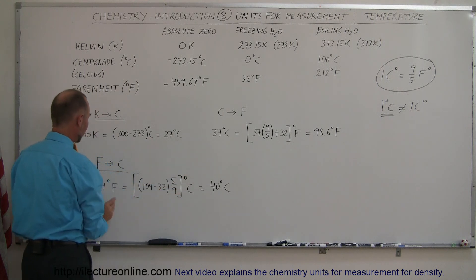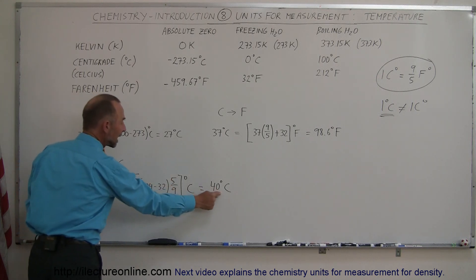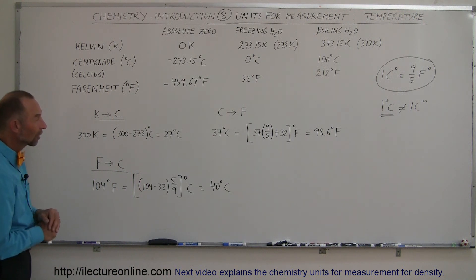And then take that and multiply that as the inverse of that ratio, or 5 nines. So if you take 104 degrees Fahrenheit, minus 32, and take that quantity, multiply it by 5 nines, you get the equivalents in centigrade degrees. In this case, 104 degrees Fahrenheit is 40 degrees centigrade.